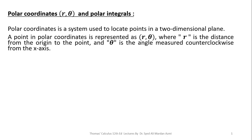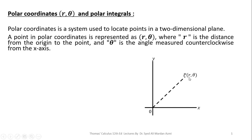A polar coordinate is a system which is used to locate a point in a two-dimensional plane. A point in a polar coordinate is represented by R and theta, where R is the distance of the point from the origin and theta is the angle measured in counterclockwise direction with the positive x-axis.